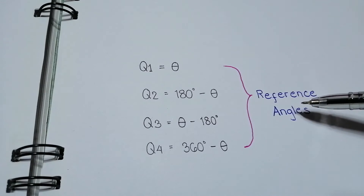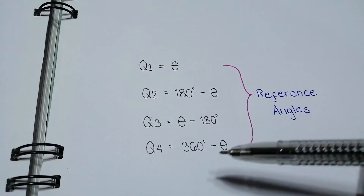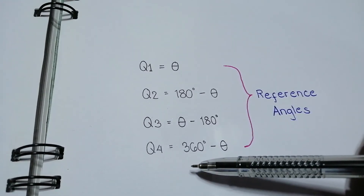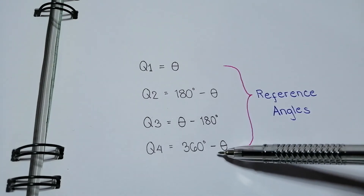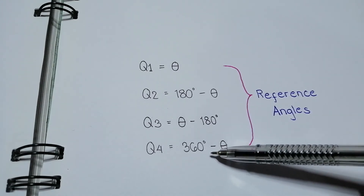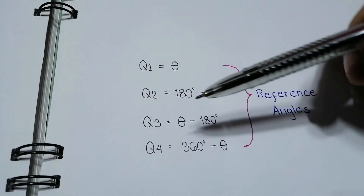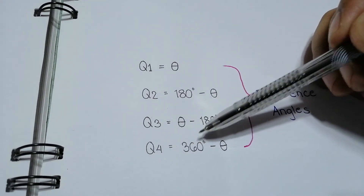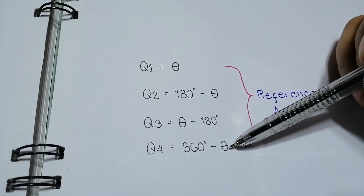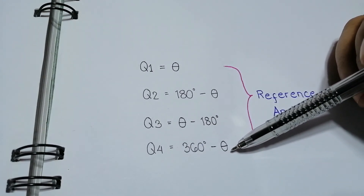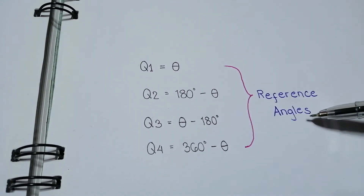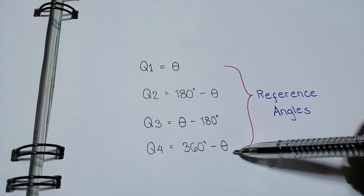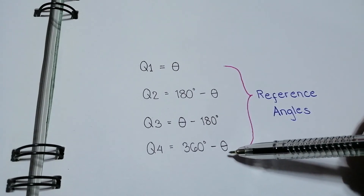That will be our reference angle for the third quadrant. And lastly, if the terminal side is on the fourth quadrant, the reference angle is formed by the terminal side and the positive x-axis. To get the reference angle, we subtract 360 degrees by the given angle — which must be greater than 270 but less than 360 degrees — and that will be our reference angle at the fourth quadrant.